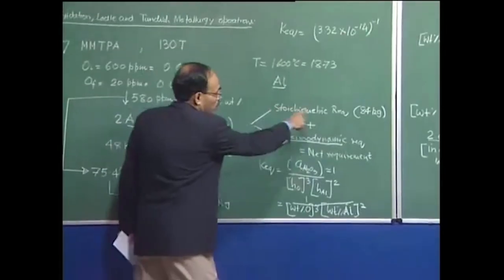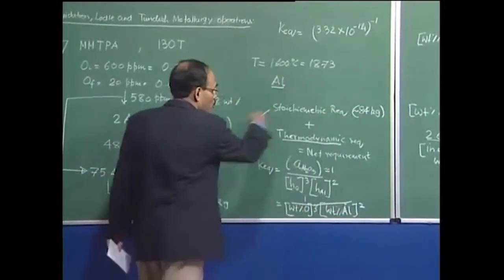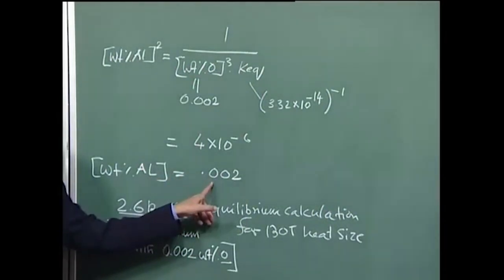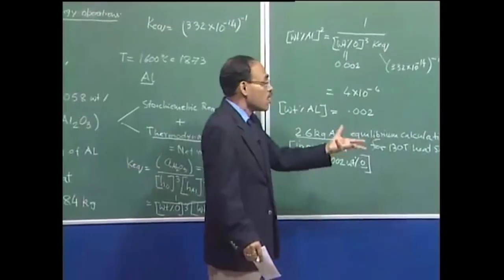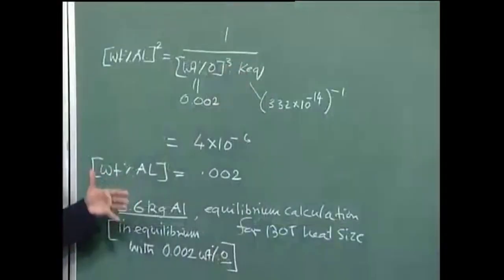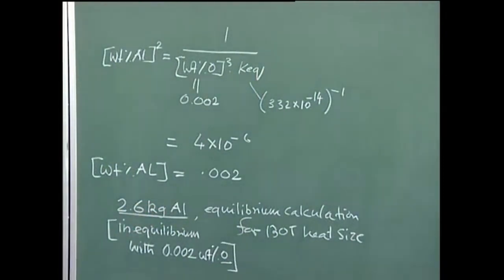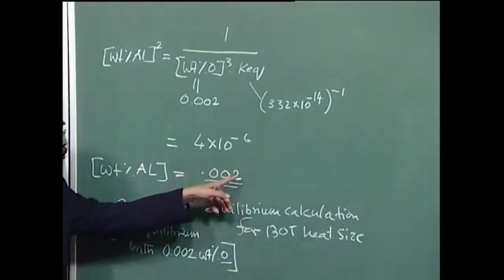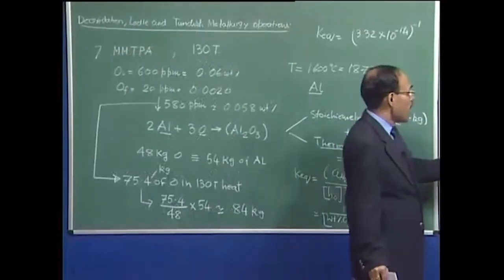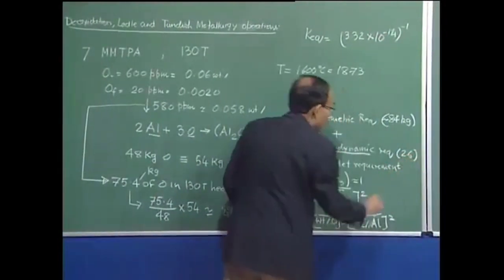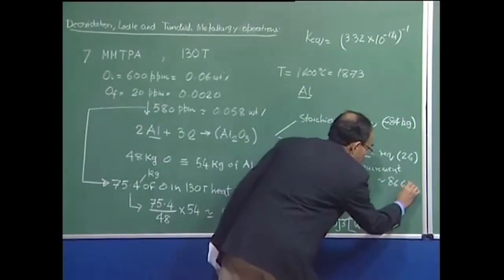We have already obtained approximately 84 kg as the stoichiometric requirement. The weight percentage of aluminium in equilibrium corresponds to 0.002 wt%, so in a 130-ton heat, the thermodynamic requirement is 2.6 kg of aluminium. Summing the two components, the net requirement is approximately 86.6 kg of aluminium for every 130-ton heat.